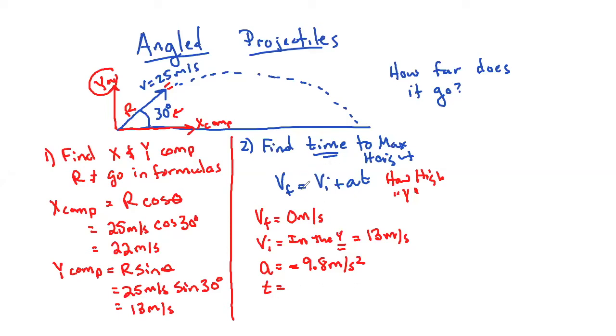And I want to know my time to max height. So when I substitute into this formula, I see that my time comes out to, and you can do this on your calculator, is equal to 1.32 seconds. Now, this is the time to max height.